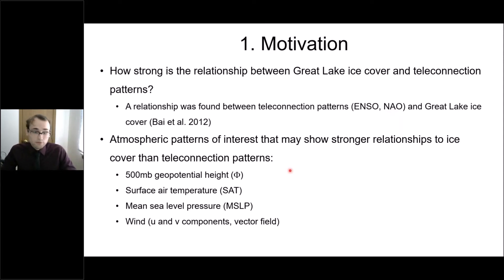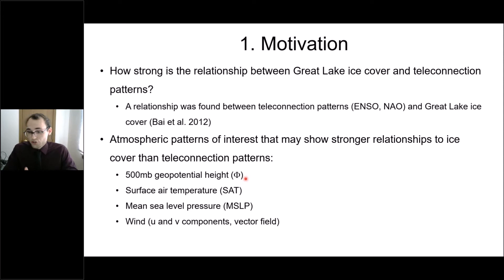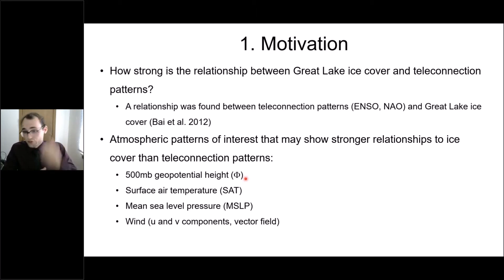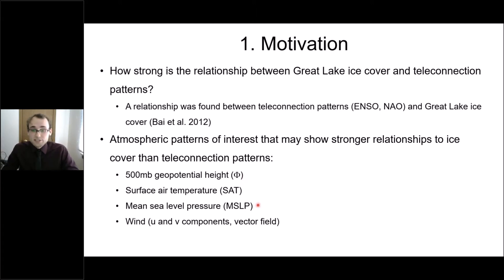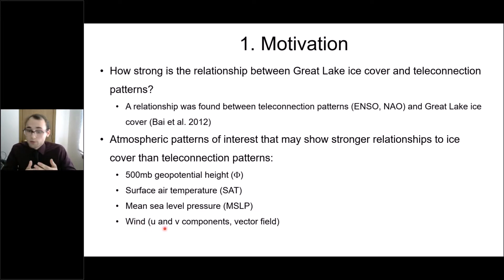We looked at four variables. The first is the 500 millibar geopotential height (Φ), a measure of the altitude at which air pressure equals 500 millibars. Patterns of 500 millibar heights are very important for the movement of surface pressure systems and mid-to-upper level flow. We also looked at surface air temperature (SAT), mean sea level pressure (the pressure adjusted to sea level), and wind broken into its U component (west–east) and V component (north–south), as well as the collective wind vectors.